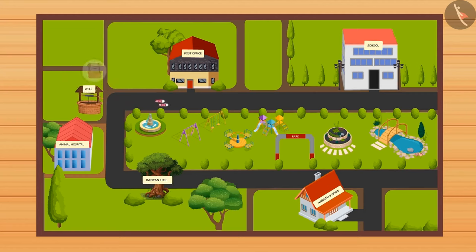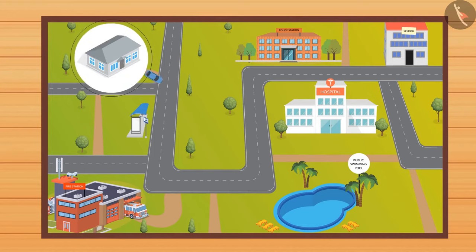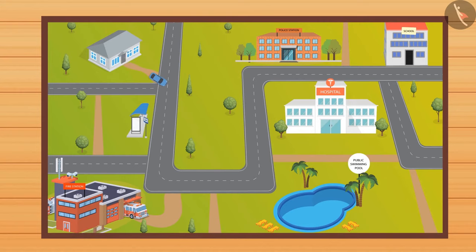Now let's see how Raju reaches his school. He is driven to the school by his father in a car. They take the car out of the gate and turn right. The car moves straight, then they take a left from the fire station.